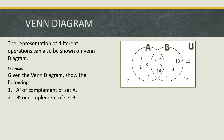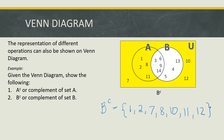How about the complement of set B? To show it using the Venn Diagram, the complement of set B contains all elements in the universal set that do not belong to set B. Therefore, we shade the elements not in set B. The elements are 1, 2, 7, 8, 10, 11, and 12. These are the elements of the complement of set B.